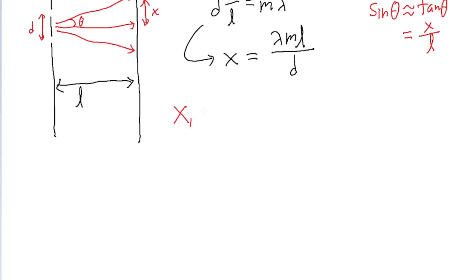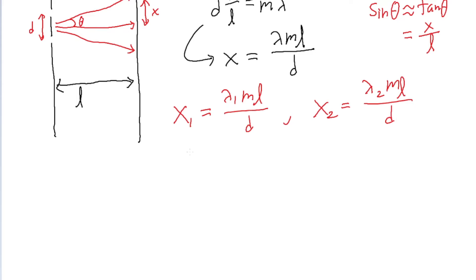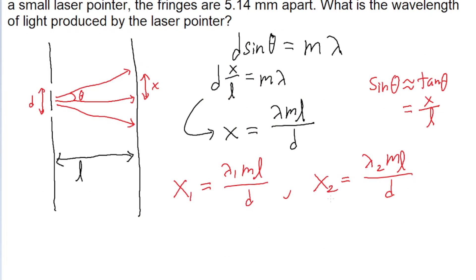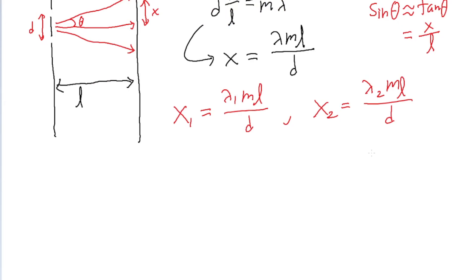There are two different versions of this x equation for each of the two lasers. For x sub 1, the only thing that's changing is the wavelength, so x sub 1 equals lambda sub 1 times M times L divided by D. Let's say x sub 1 and lambda sub 1 refer to the distance and wavelength given for the first laser, and x sub 2 and lambda sub 2 refer to the second laser, where we're only given x sub 2 and lambda sub 2 is what we're trying to find. So we'll rewrite this equation to solve for lambda sub 2, giving us lambda sub 2 equals D divided by L, all multiplied by x sub 2.